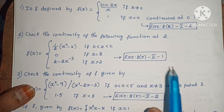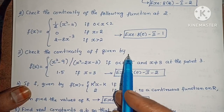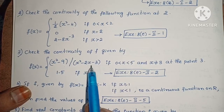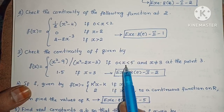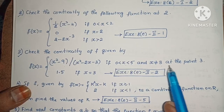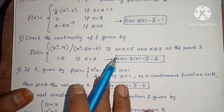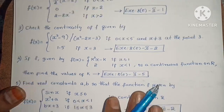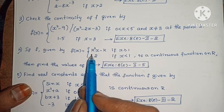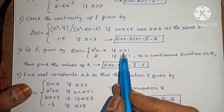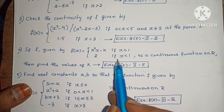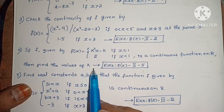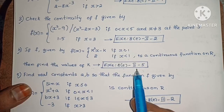Next: Check the continuity of f given by f of x equals x squared minus 9 by x squared minus 2x minus 3, if 0 less than x less than 5 and x not equals to 3, at the point 3; and 1.5 if x equals to 3. Exercise 8d, second roman law, second one. Next: If f given by f of x equals k squared x minus k if x greater than or equals to 1, and 2 if x less than 1 is a continuous function, then find the values of k. Exercise 8d, second roman law, fifth one.